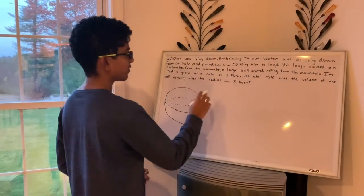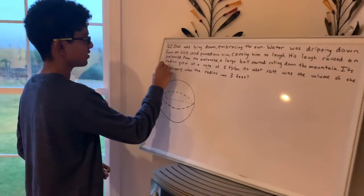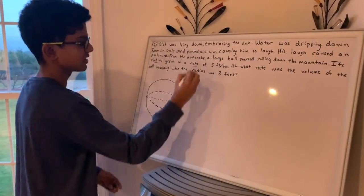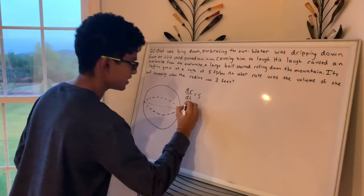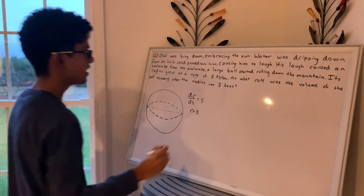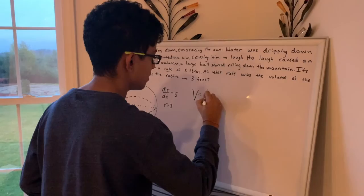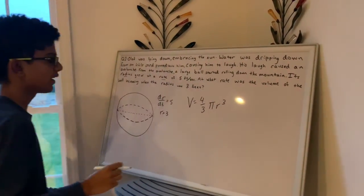So we have to write down what we know from the problem. We know the rate means derivative and this is the radius. So that would be dr over dt and it gives us 5 feet per second. And then it also gives us that the radius is 3 feet. And since we know it's a ball which is a sphere, it will be V equals 4 thirds pi r cubed.